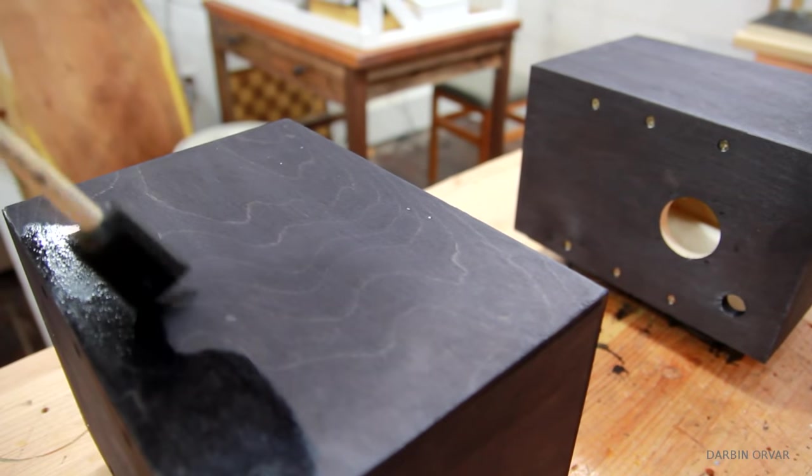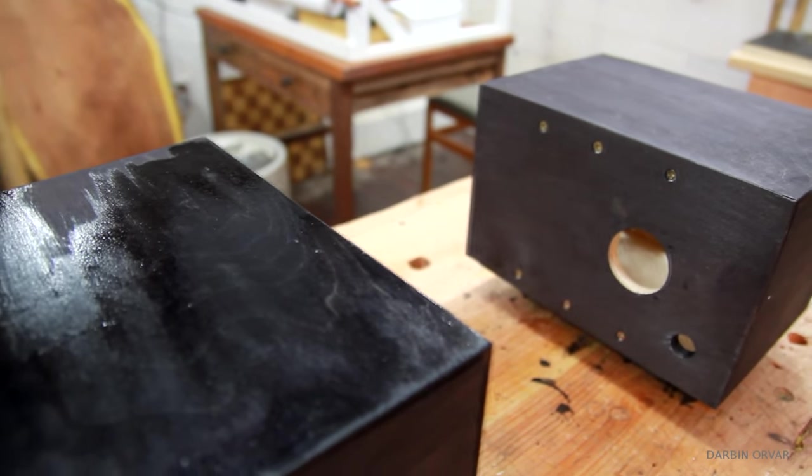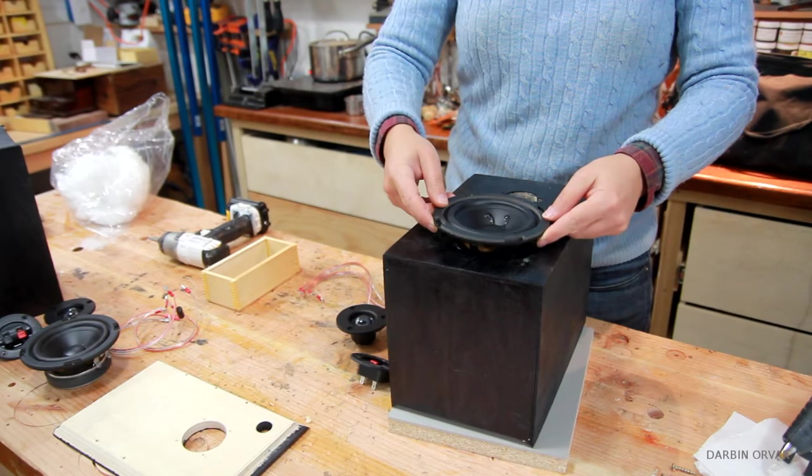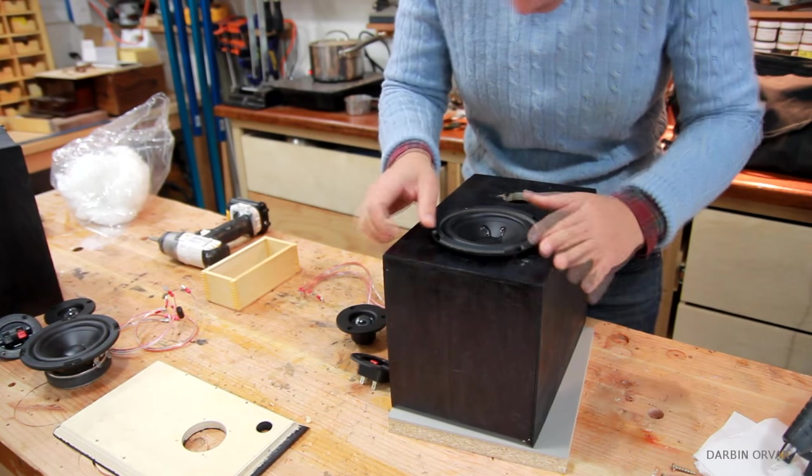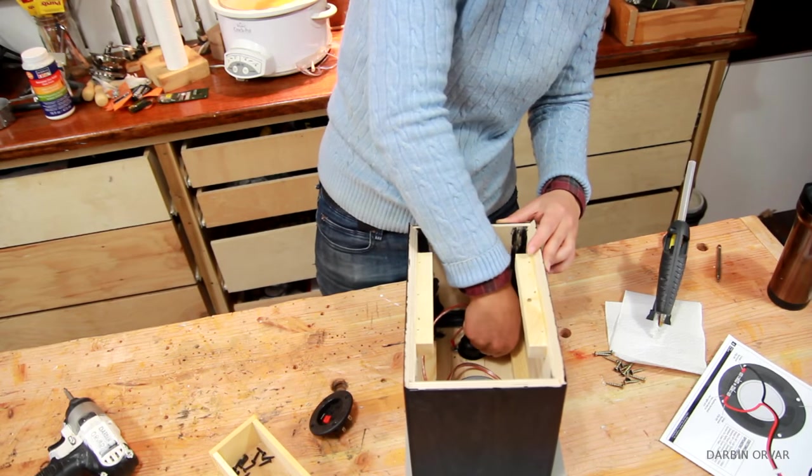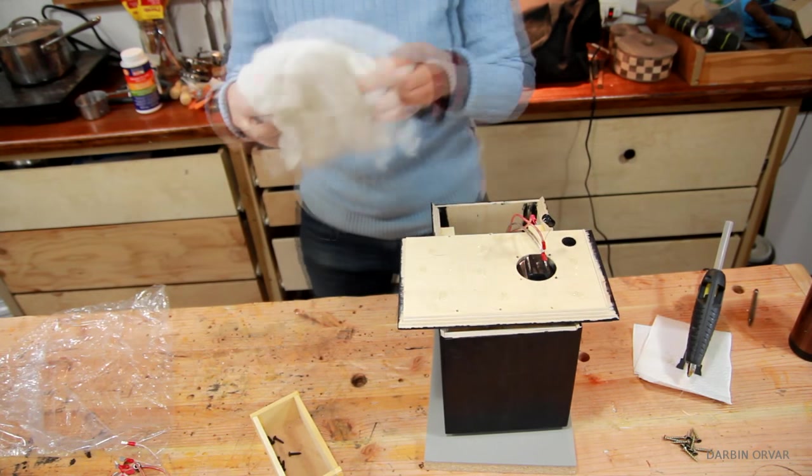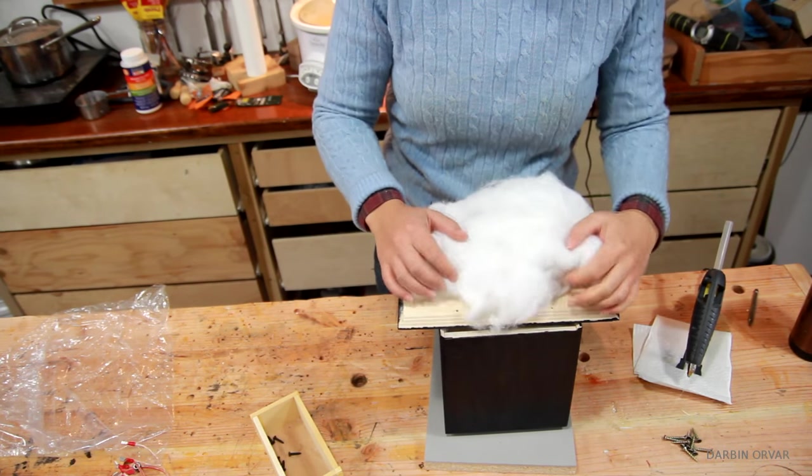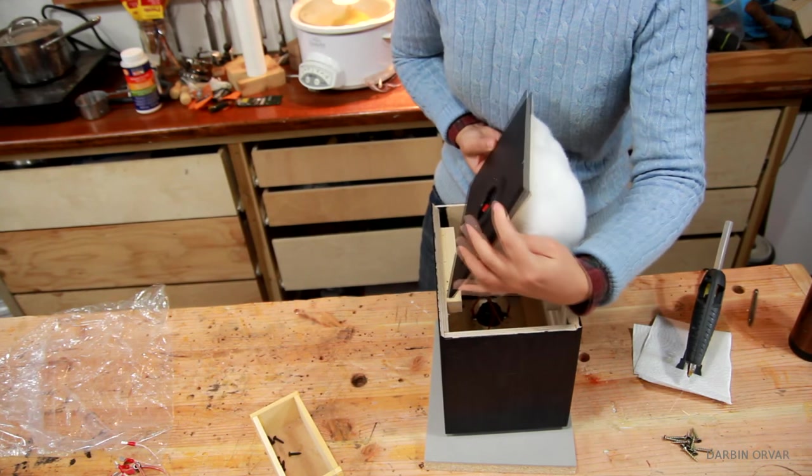For a top coat, I went with shellac. Once everything was dry, I put in the electronics and connected everything. I also put down some hot glue to secure the soundproofing filler, and then I closed the box and repeated with the second one.